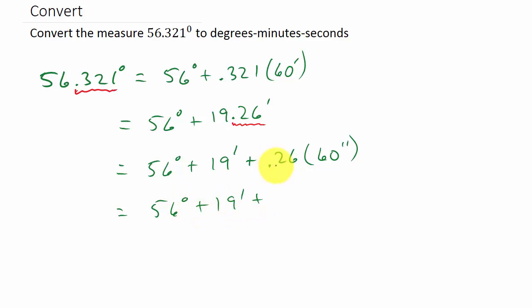And then 0.26 times 60, that's 15.6 seconds. So we get 56 degrees, 19 minutes, and 15.6 seconds.